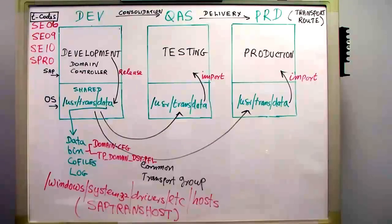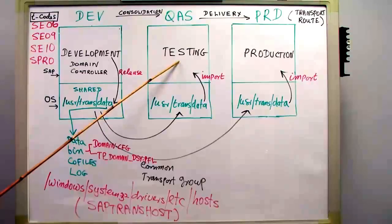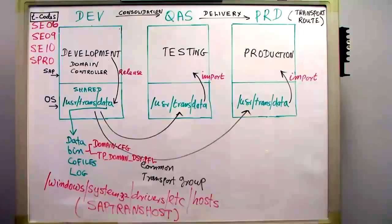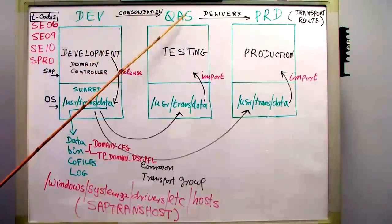In this system landscape, we have three systems: Development, Testing, and Production. We create requests in development, import them to testing for validation, then import to production. The route between development and QA is consolidation, and the route between QA and production is delivery.